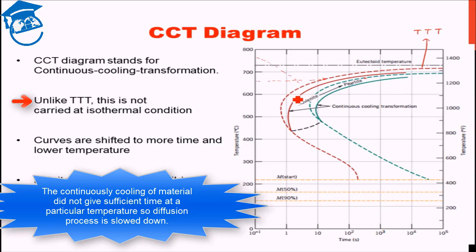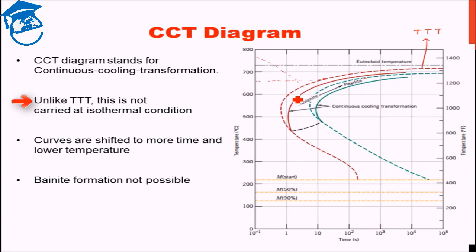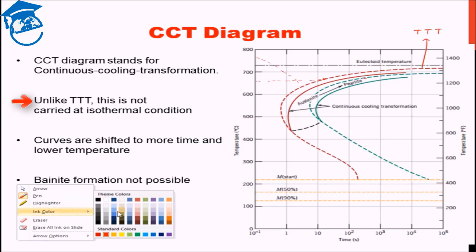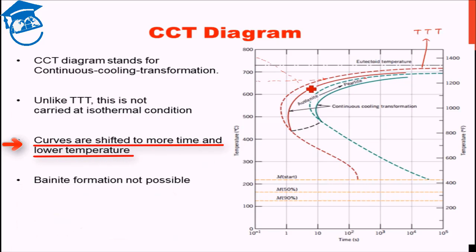And this effect of continuously cooling and continuously lowering the temperature is manifested by a change or shift in the curves for pearlite formation to more time and lower temperature.